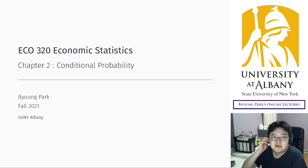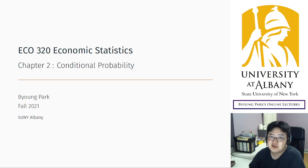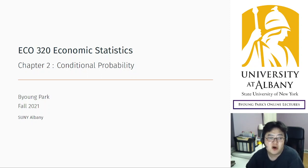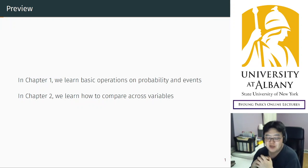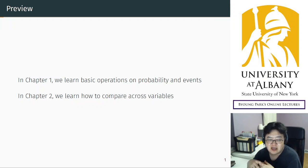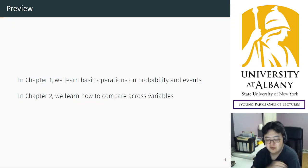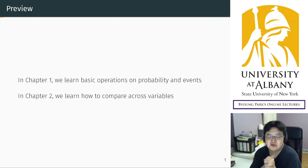We are entering the second chapter of the semester, which is about conditional probability — a continued framework from chapter one. In chapter one, we learned the basics: how we define probability, how we manipulate events, outcomes, and sample space, and how we connect those manipulated events to probabilities.